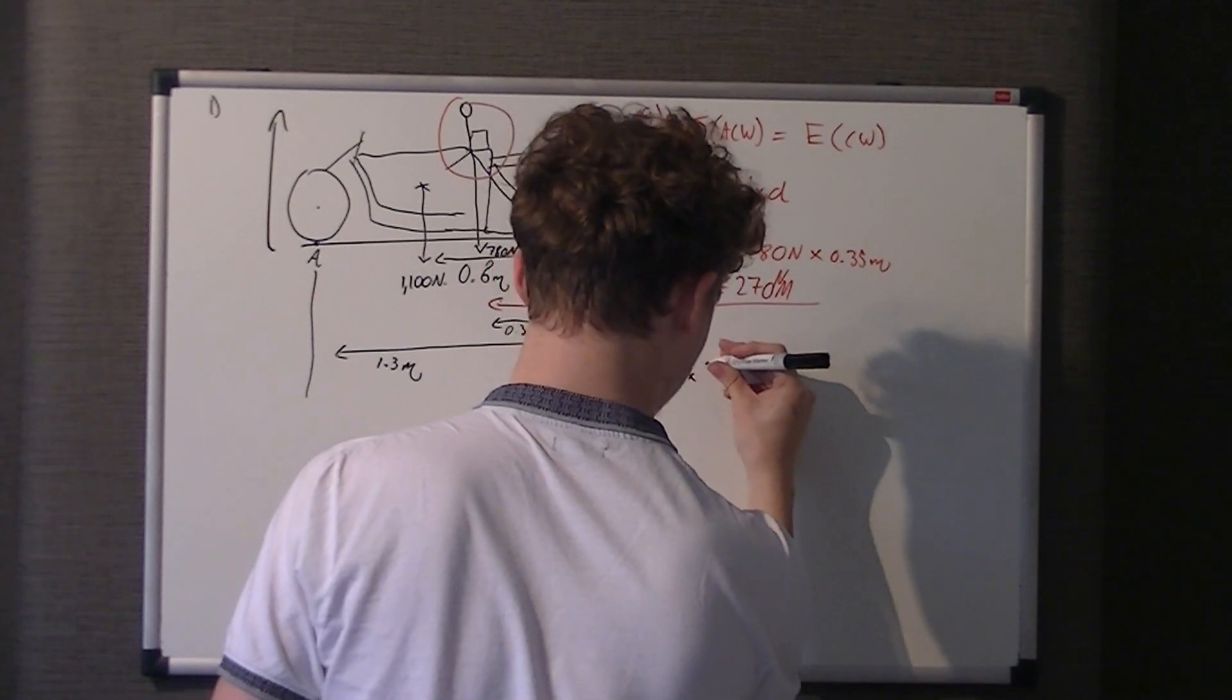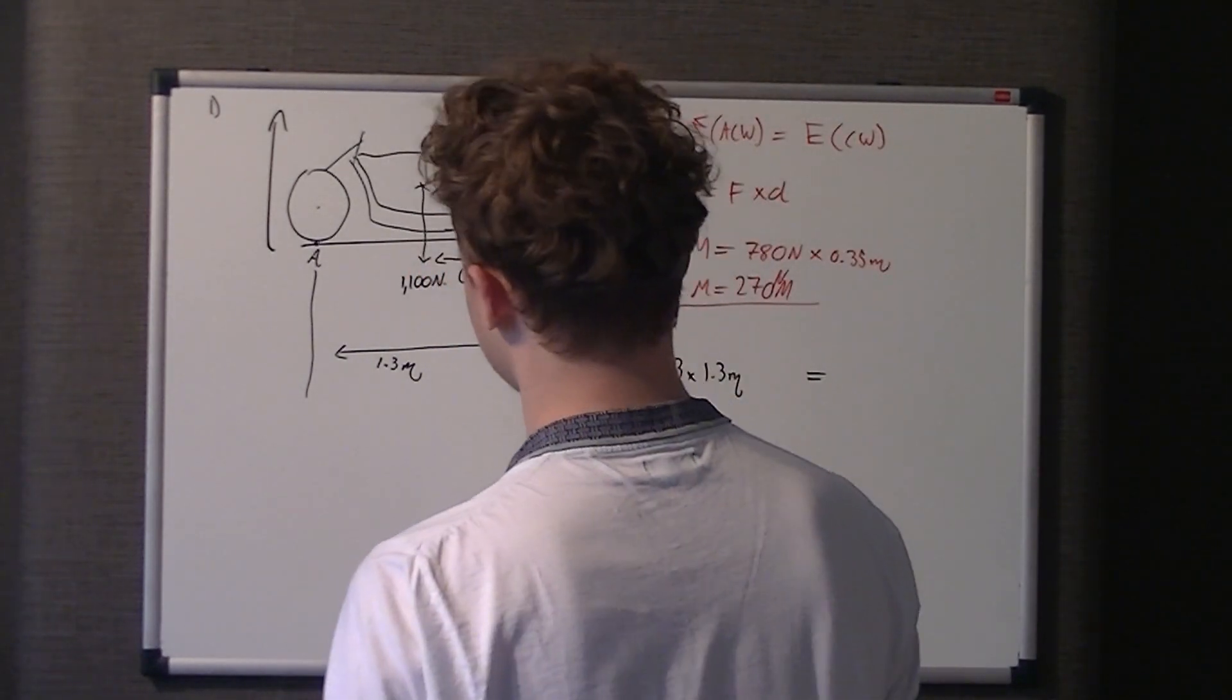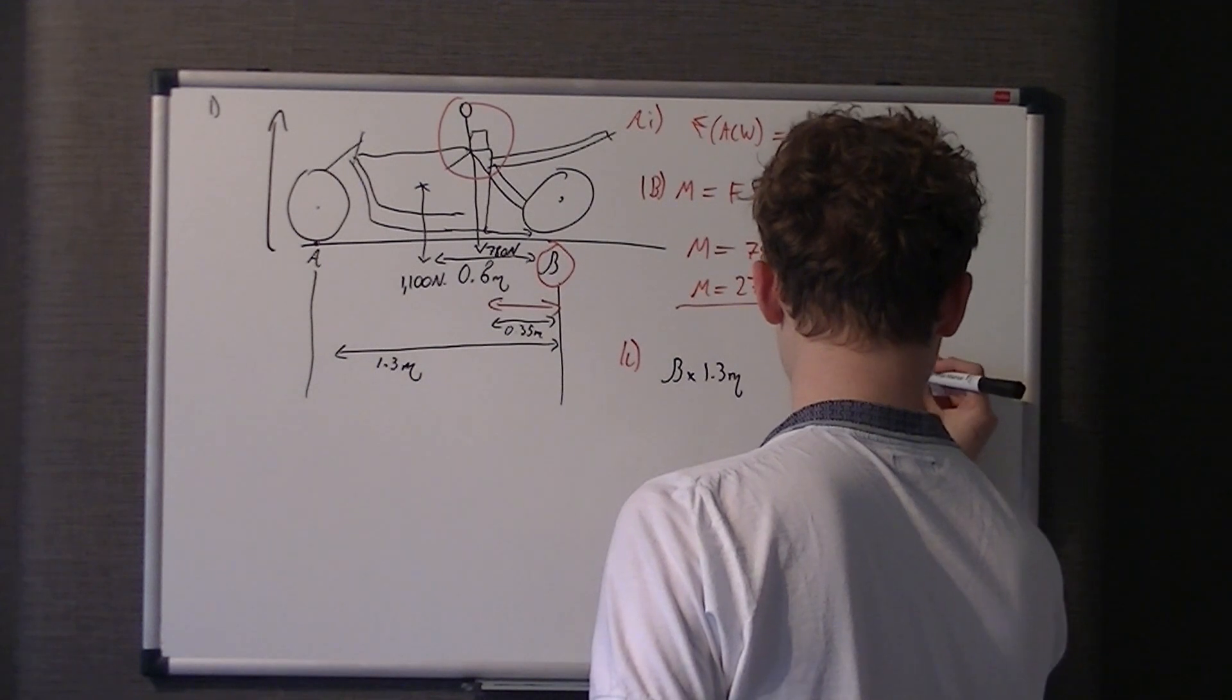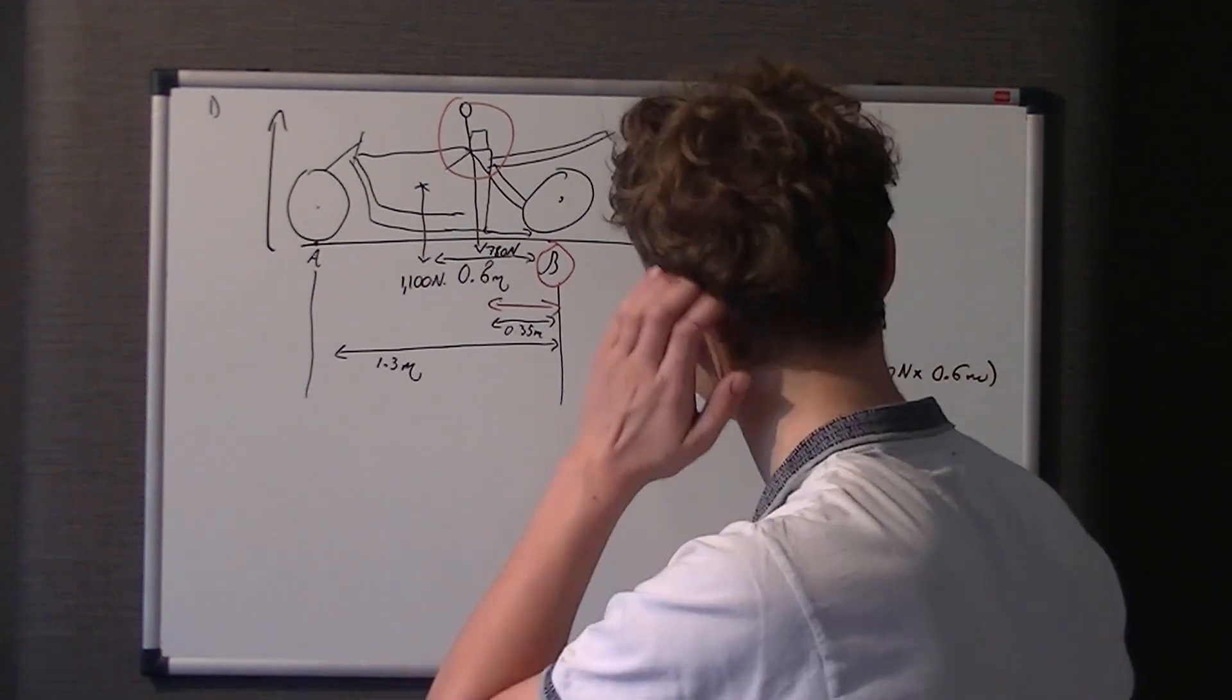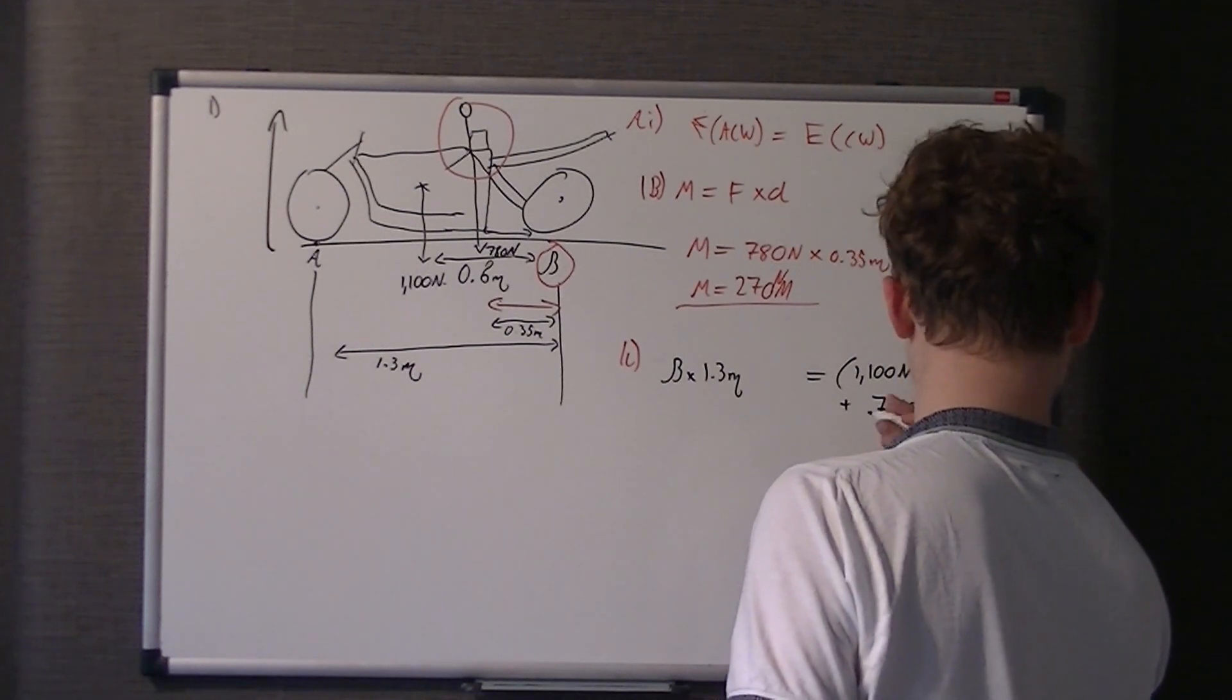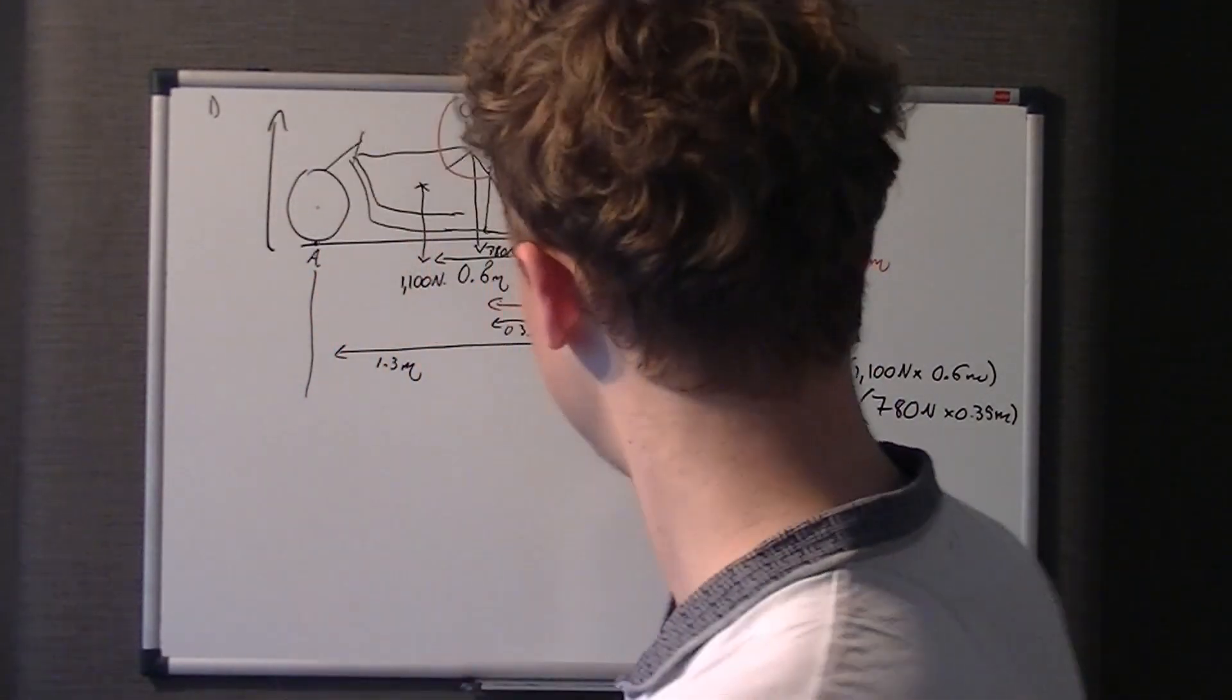Which is, as B is going this way, A is going that way. We do B times the distance. 1.3 metres is the difference between the two points. So, B times 1.3 metres. And we do all the clockwise moments there. Equals, about B. Let me just make sure I've done this right. Equals 1100 newtons times the distance, 0.6 metres to B. Plus the rider's weight, which is 780 newtons times 0.35 metres.